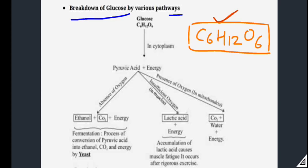When glucose breaks, it becomes two compounds: the first is pyruvic acid and the second is energy. So glucose breaks into pyruvic acid plus energy. Now from pyruvic acid and energy, there are two conditions. The first condition is the absence of oxygen, and the second condition is when oxygen is present in the cell. The products will be different in both conditions.